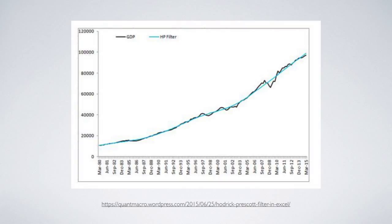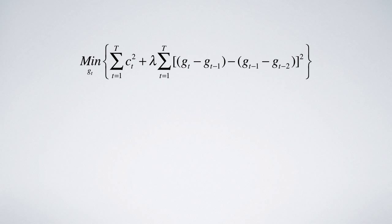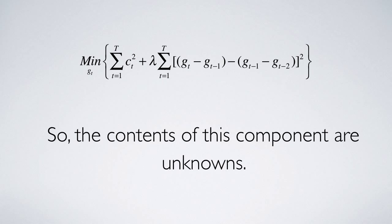This is a result produced by someone on the internet. The problem is essentially to solve for G by minimizing the second component of this equation. But G in the component itself is unknown. It is like trying to find a class representative without knowing the class students.